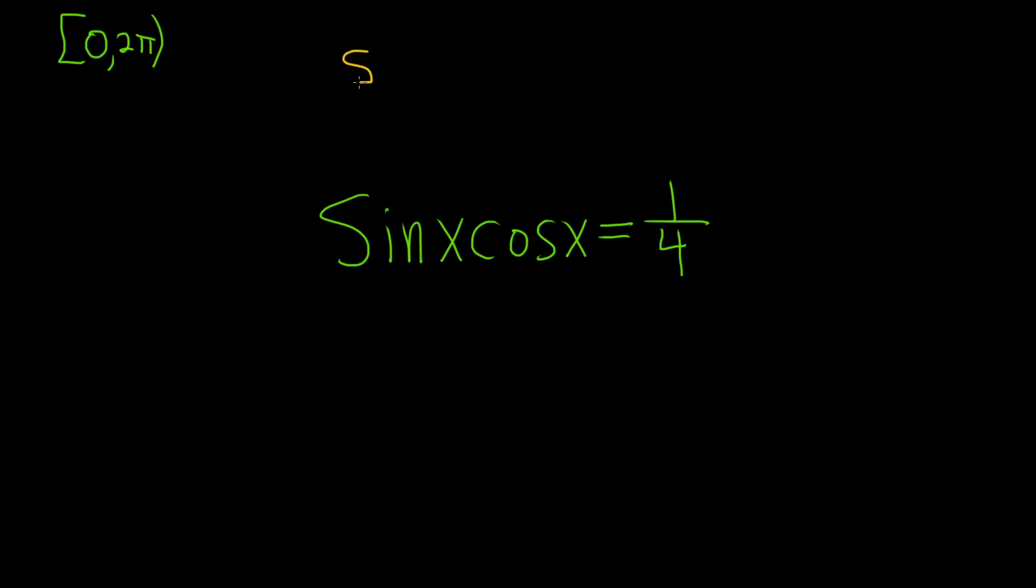So if you have the sine of 2x, that's actually equal to 2 times the sine of x times the cosine of x.